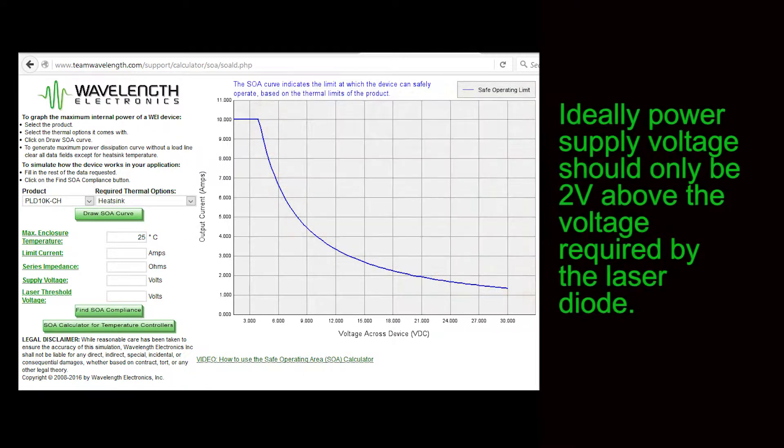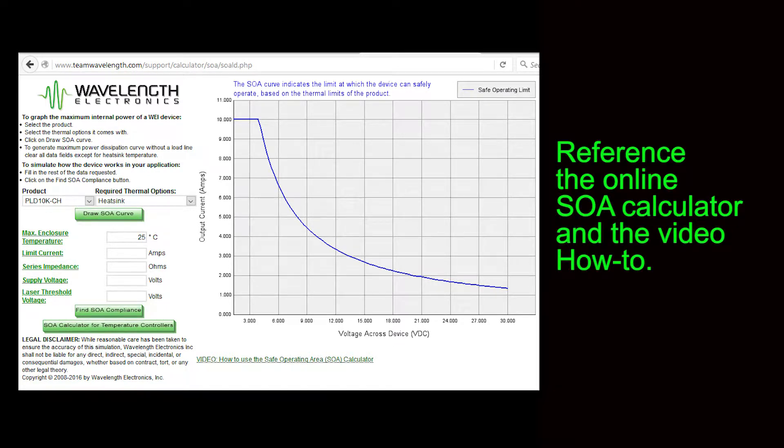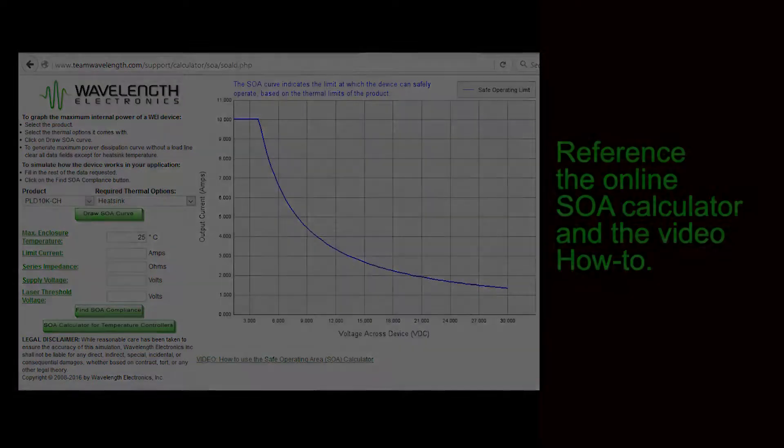Ideally, the power supply voltage will only be 2 volts above the voltage required by the laser diode. A safe operating area calculator is available online. You may also see our video on YouTube that details how to use the SOA calculator.